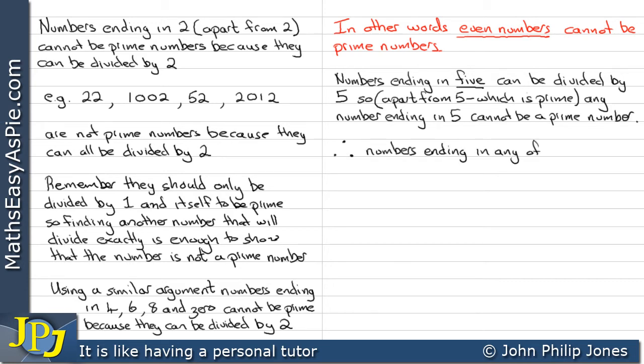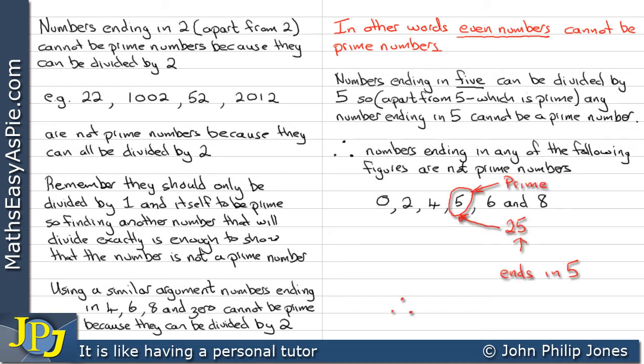Therefore, numbers ending in any of the following figures are not prime numbers. Of course we can see 5 is prime, but we are talking about ending in 5. So 25, for example, we can see ends in 5 and we can say that is not a prime number because it can be divided by 5. And we can see when something can be divided by 5 because the last figure is 5.